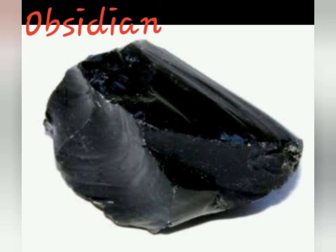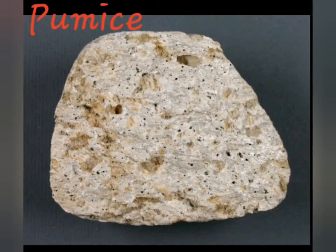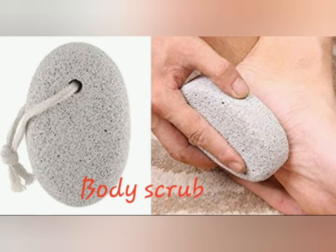The next one is obsidian. Obsidian is formed when lava cools quickly above the ground. It is shiny and glassy, and usually black or dark in color. The edges of obsidian are very hard, hence this rock is used for cutting tools. The last one is pumice. Pumice is formed when lava cools quickly above the earth's crust. It is very hard and contains small holes formed when gases are trapped and released during formation. Pumice powder is used by dentists for polishing teeth and is also used as a body scrubber.